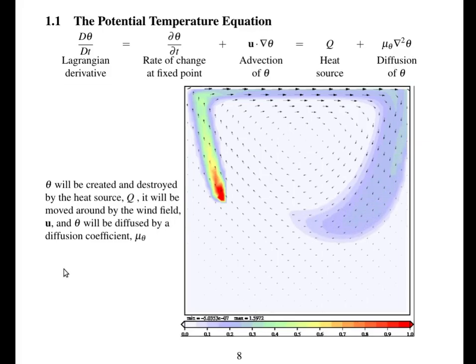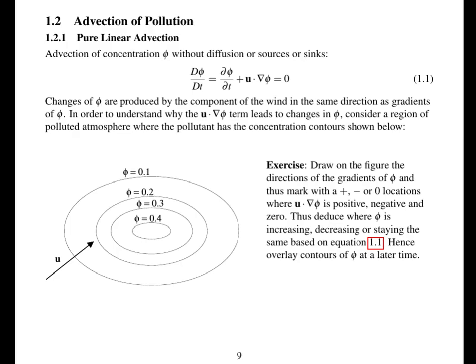There's heat sources and the diffusion of theta. So theta will be created or destroyed by the heat source Q. And in this animation, there's a heat source Q here, which is being moved around by this wind field and then diffused as well.